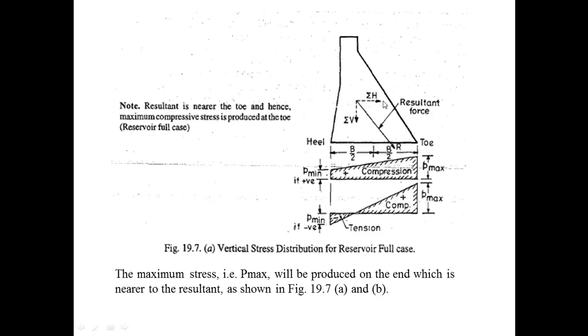This is the total vertical stress ΣV while this is the horizontal stress ΣH. This is Pmin which is positive when the reservoir is full, and this is the Pmax value. As you can see, when the reservoir is full, maximum stress or compressive stress is produced near the toe.